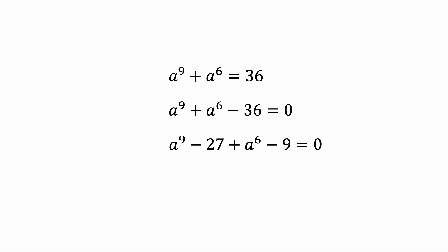Now we can bring 27 close to a to the power 9 and minus 9 close to a to the power 6. And now we can combine them with each other. As you can see, 27 is 3 to the power 3 and 9 is 3 to the power 2. This is gonna be beneficial for us.